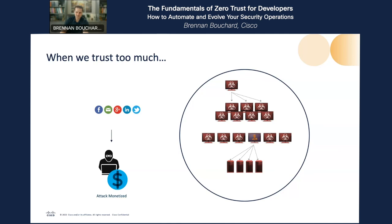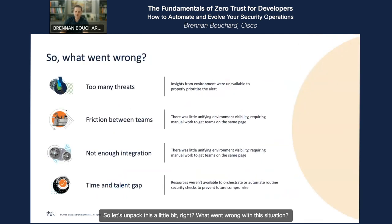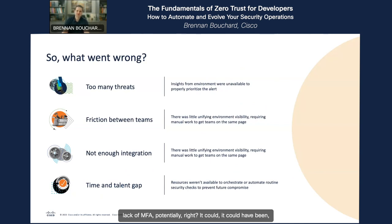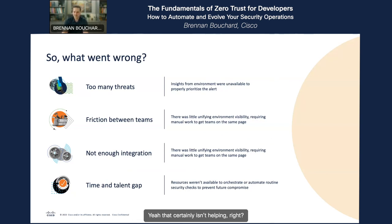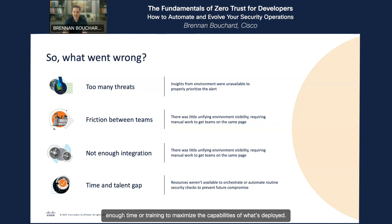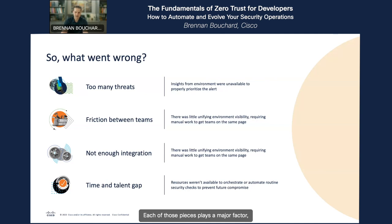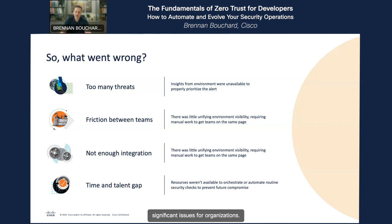Let's unpack what went wrong. Was it inadequate tooling such as email security or lack of MFA? Was it a siloed organization where a lack of information sharing makes a coordinated response really difficult? It could be because the tools don't work together, and the team hasn't had enough time or training to maximize the capabilities of what's deployed — it's turned on, but not every feature is enabled or leveraged to its greatest extent. Each of those pieces plays a major factor, and it's the cumulation of so many challenges stacked on top of each other that creates significant issues for organizations.